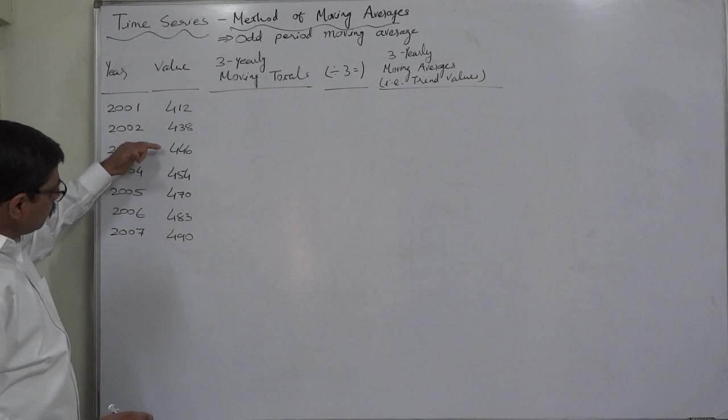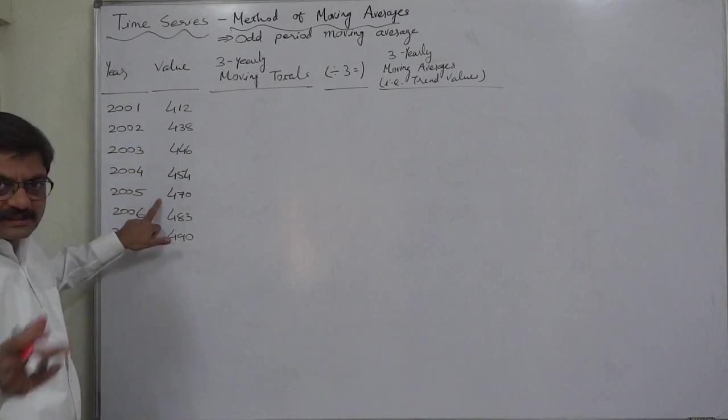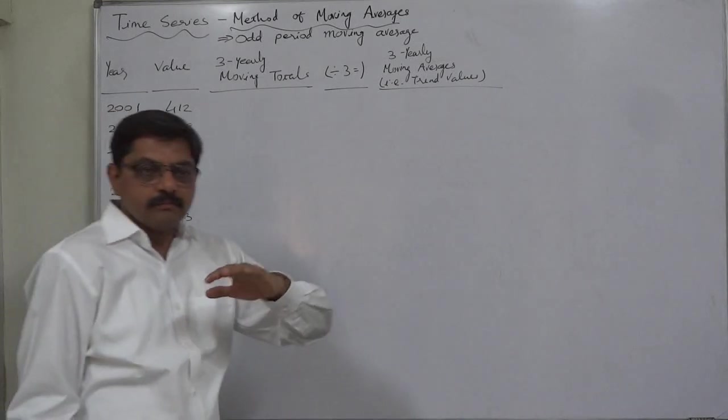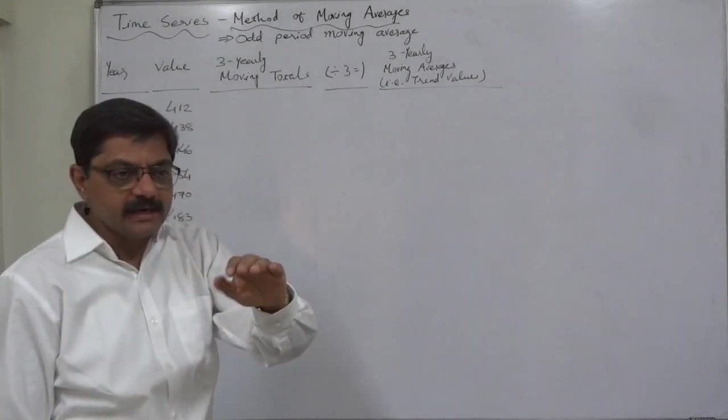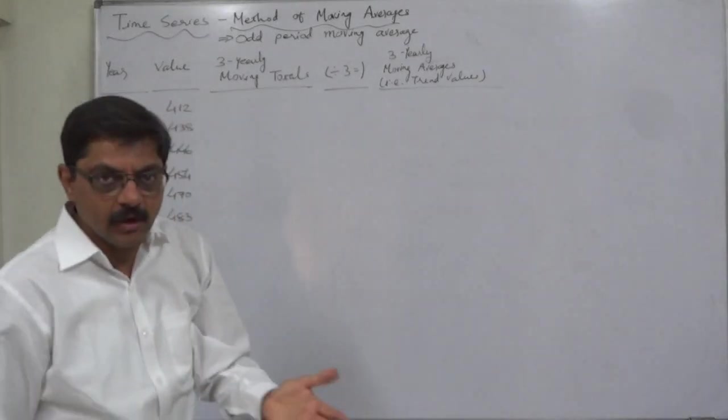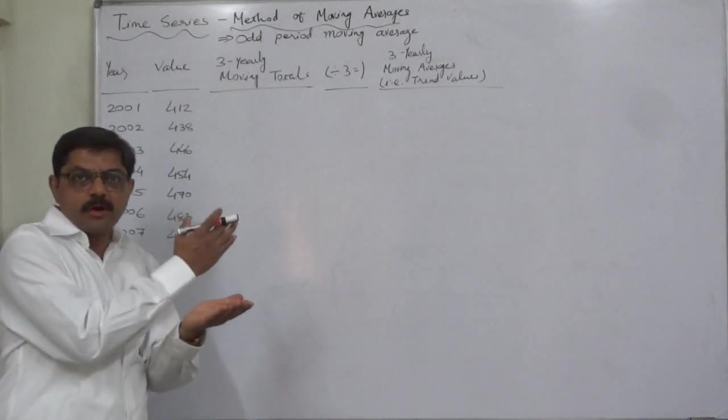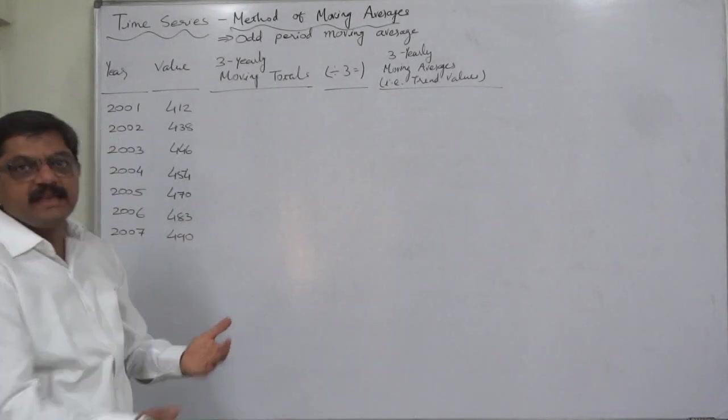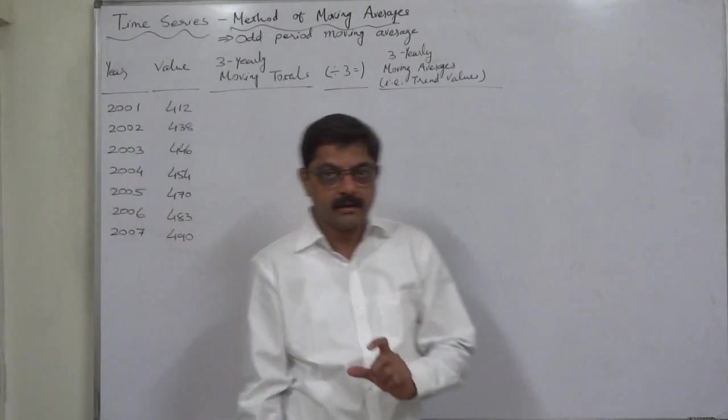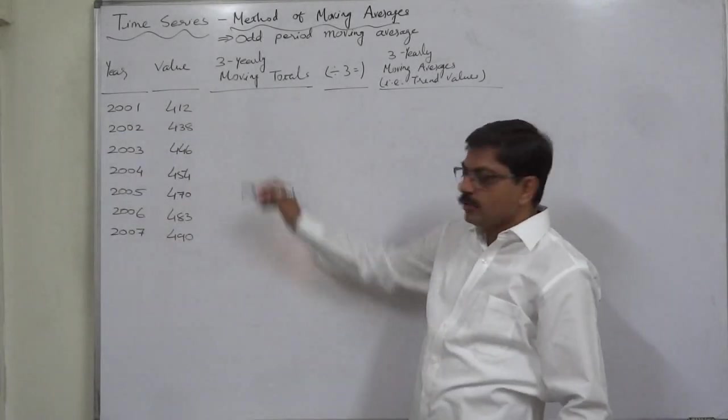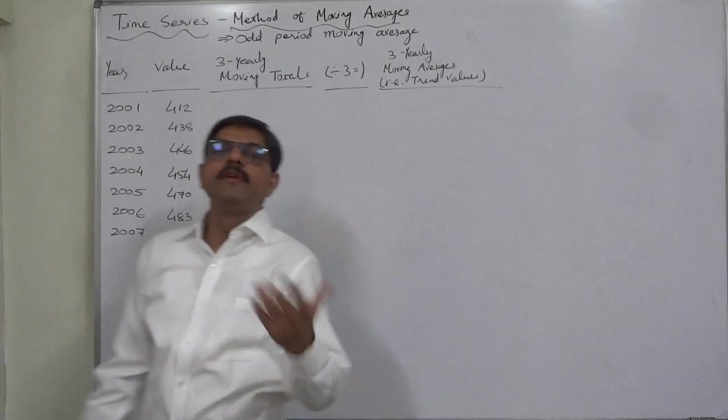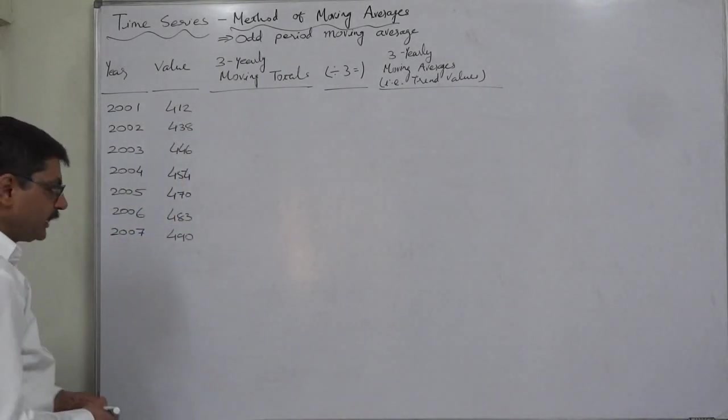Then average of third, fourth, fifth year - these are three. So the block of three periods is moving. One earlier year, or rather first year of the block, is dropped and another year is added. This is called moving, and that's why this method is known as method of moving averages. Let's do it.